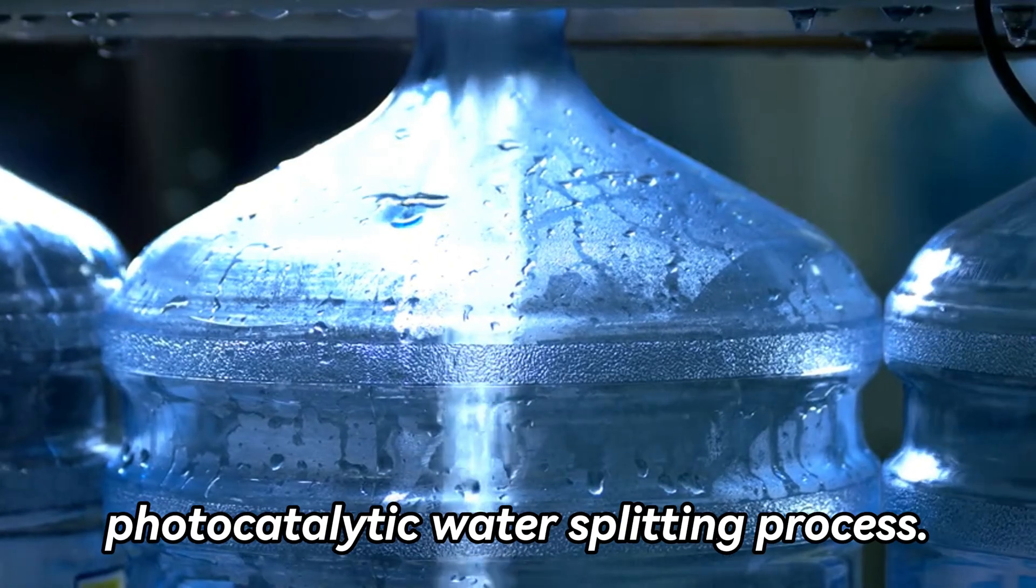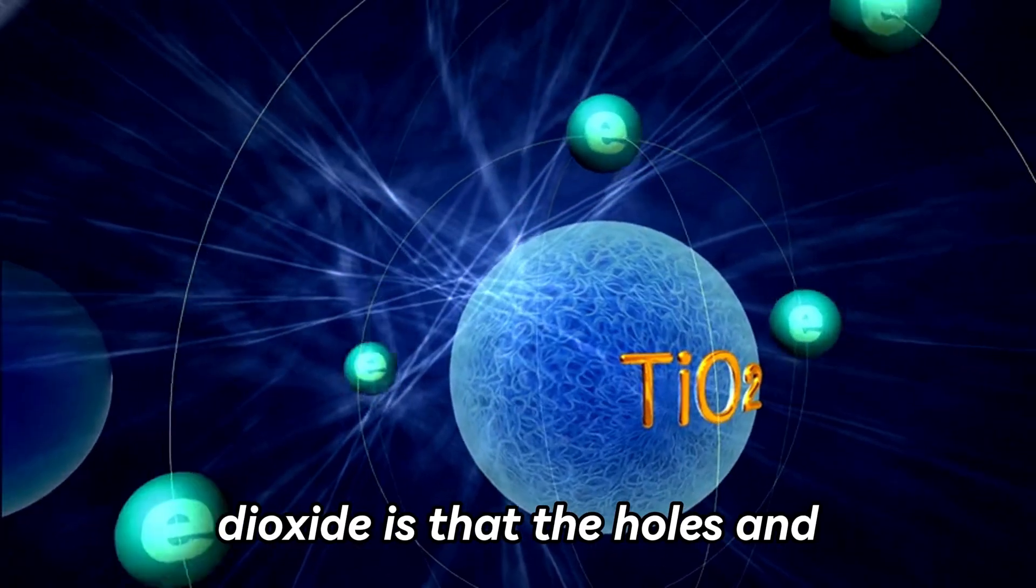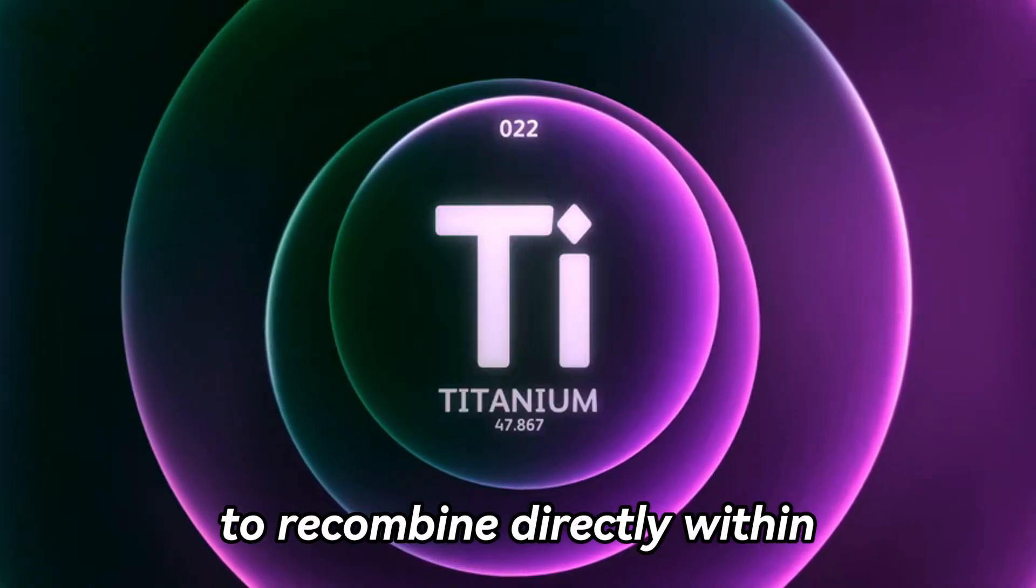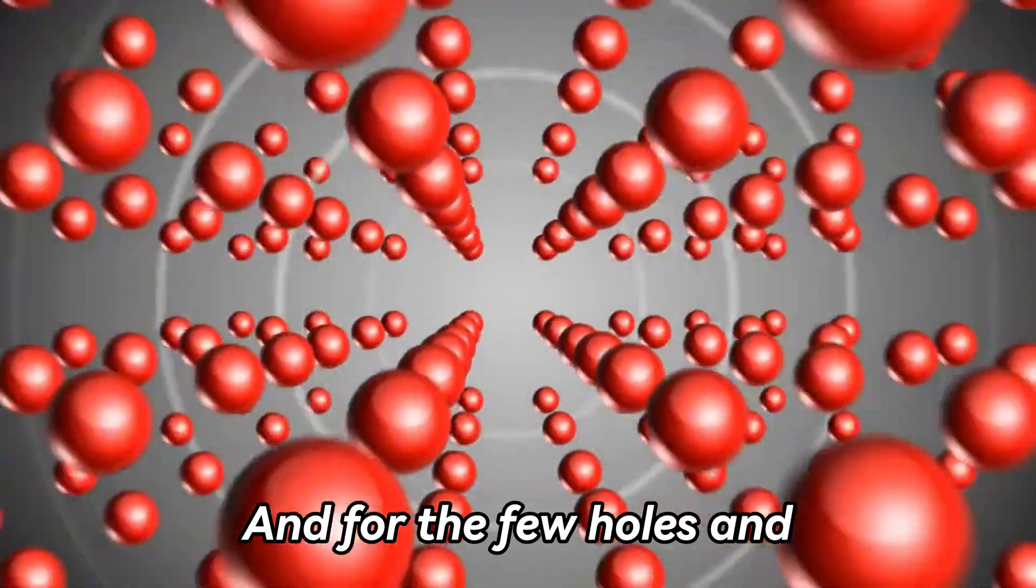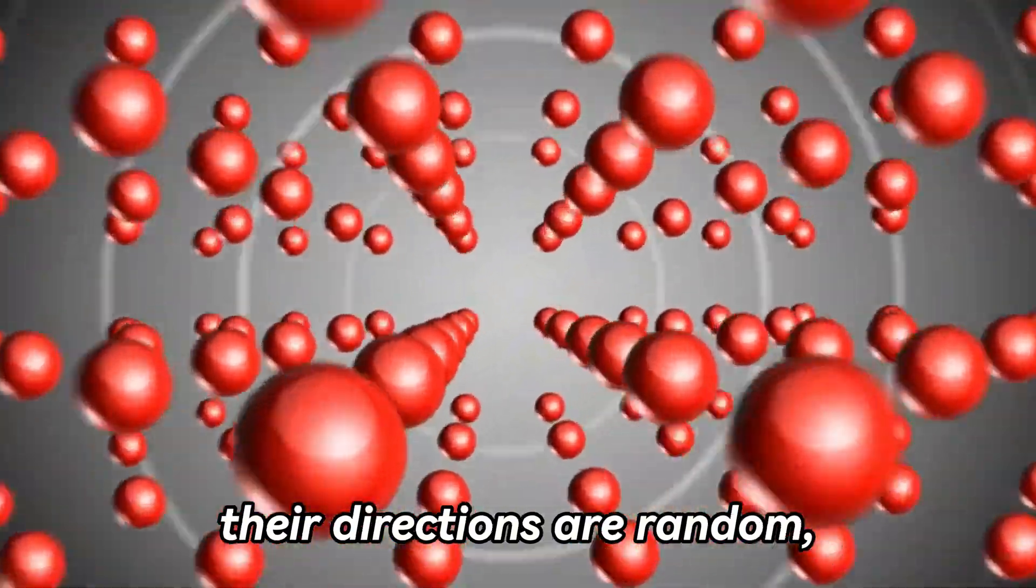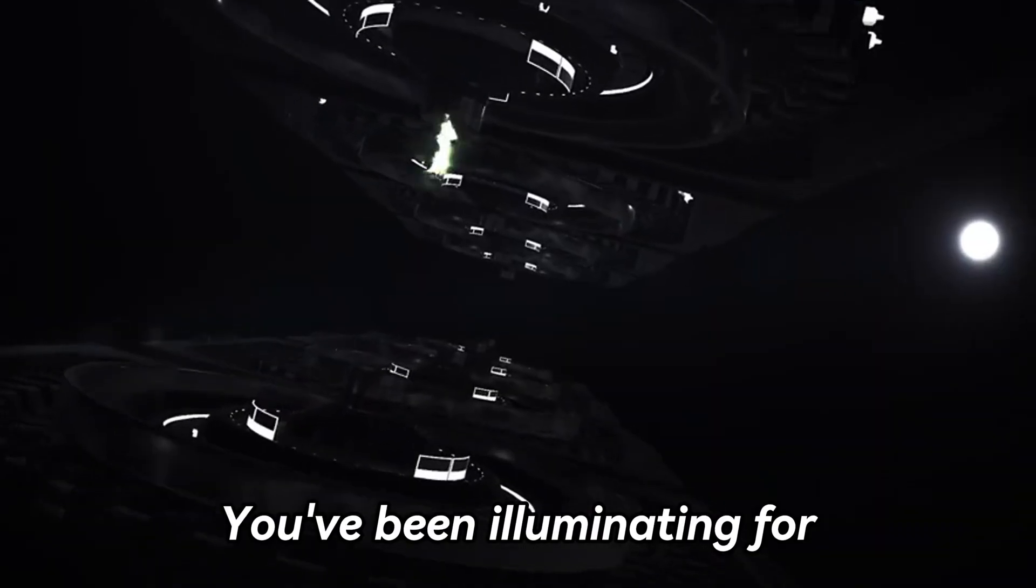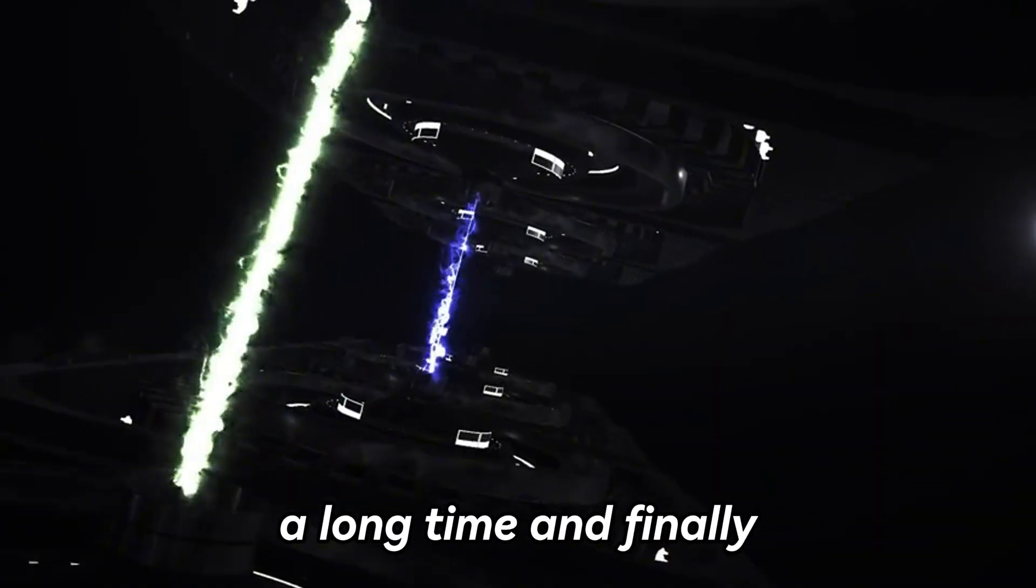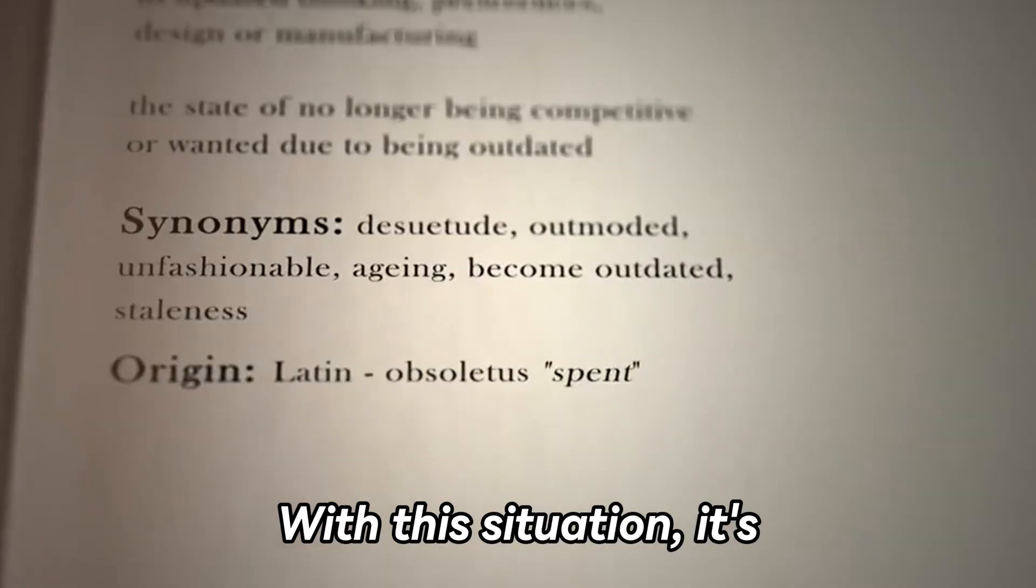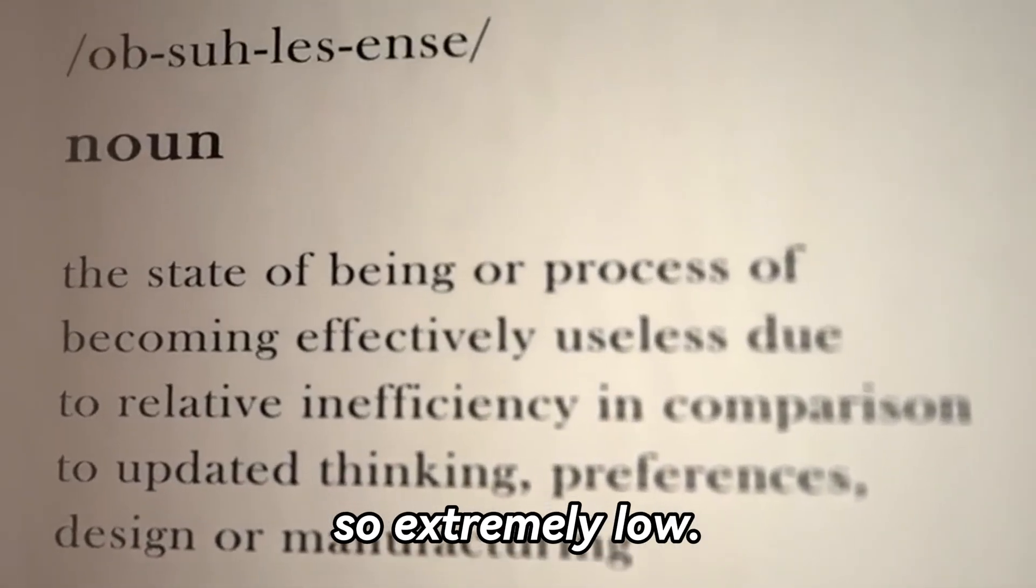This process is the photocatalytic water splitting process. The problem with titanium dioxide is that the holes and electrons excited after being illuminated are very likely to recombine directly within the body cavity. And for the few holes and electrons that manage to reach the crystal surface, their directions are random. And there is also a high probability of recombination. You've been illuminating for a long time and finally managed to generate carriers, but they recombine within one millionth of a second. With this situation, it's simply unfeasible, which is why the efficiency is so extremely low.